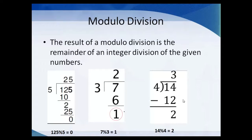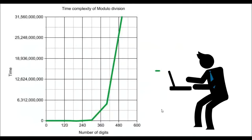Now let's see the basics of modular division. The result of a modular division is the remainder of an integer division. For example, 125 mod 5: dividing 125 by 5 gives remainder 0, so 125 mod 5 = 0. Similarly, 7 mod 3 gives remainder 1. Whenever you encounter modular division, it is nothing but the remainder of the two numbers.